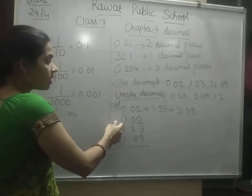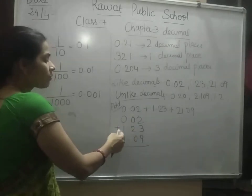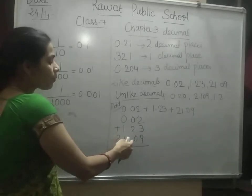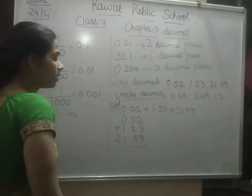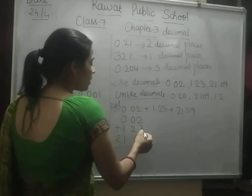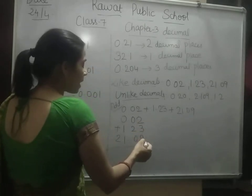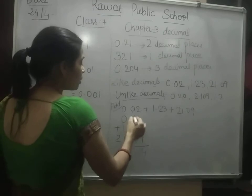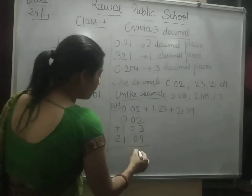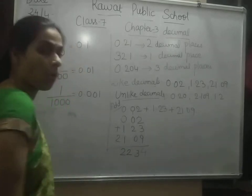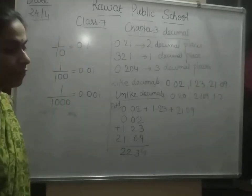So 0.02 plus 1.23 plus 21.09. Now add: 2 plus 3 is 5, plus 9 is 14 — write 4, carry 1. Then 0 plus 2 plus 0 plus the carry gives 3. Then 0 plus 1 plus 1 gives 2. So the answer is 22.34.